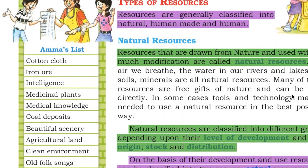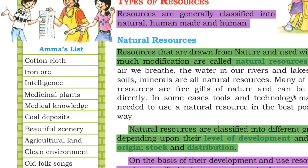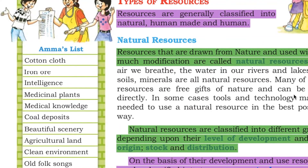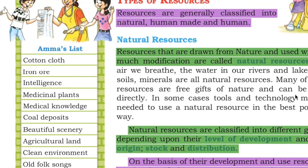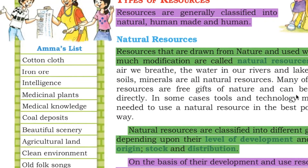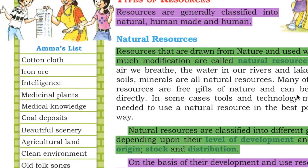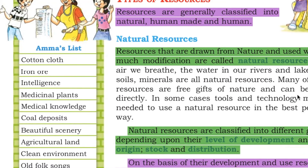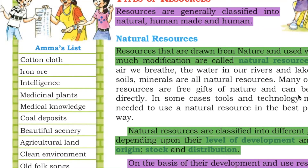Types of resources. Resources are generally classified into natural, human-made and human resources. Natural resources are those drawn from nature and used without much modification. The air we breathe, the water in our rivers and lakes, the soils and minerals are all natural resources.